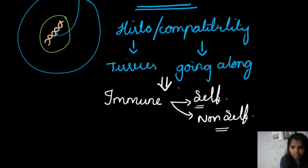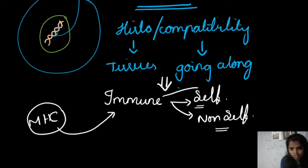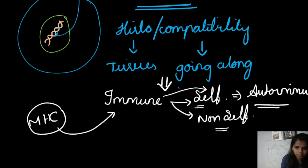If there is any problem in the MHC due to gene mutation or gene regulation, it will trigger our immune system to start working against our own self, which may lead to autoimmunity. That is why in many autoimmune diseases we will have HLA or MHC expression. Let's see the exact function of it.